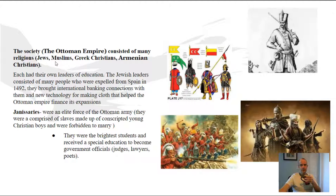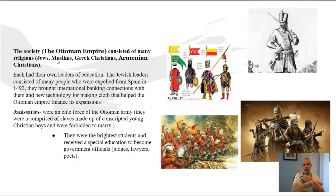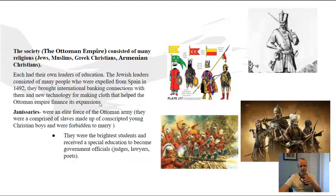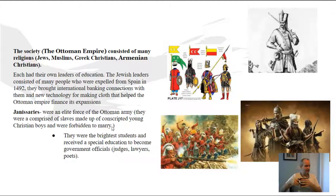The society of the Ottoman Empire consisted of many religions — it was a diverse, culturally ruled empire. Compared to Spain and the Reconquista, which kicked out Muslims and Jews, the Ottoman Empire was tolerant of other religions because Muslims see themselves as a continuation of Christianity and Judaism. If you were living as a Christian or Jew in the Muslim Empire, you would have to pay a toll — they weren't going to convert you or try you for heresy; you could practice your beliefs, you just paid a toll. Jewish leaders, many expelled from Spain, brought international banking connections with them.